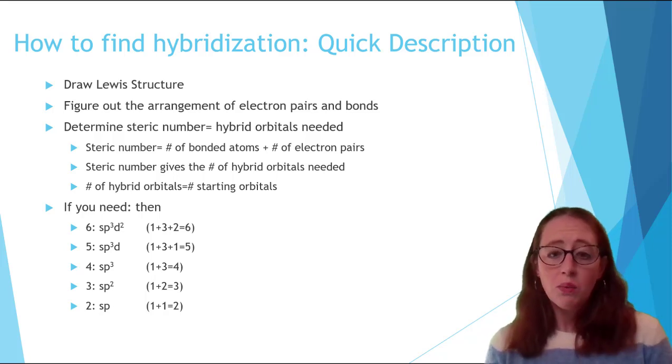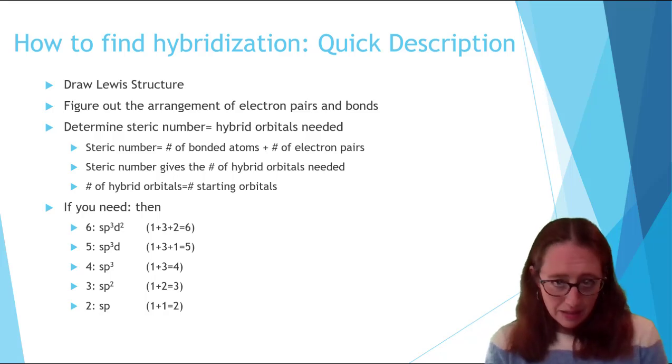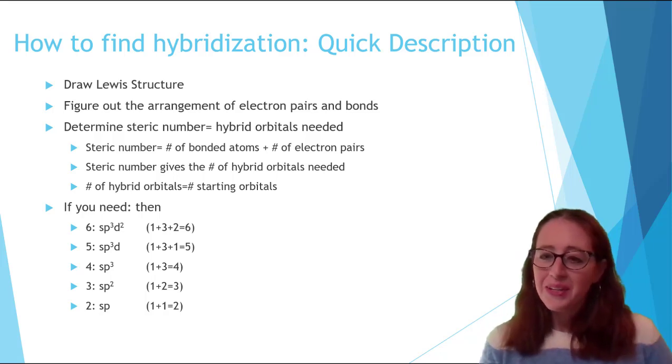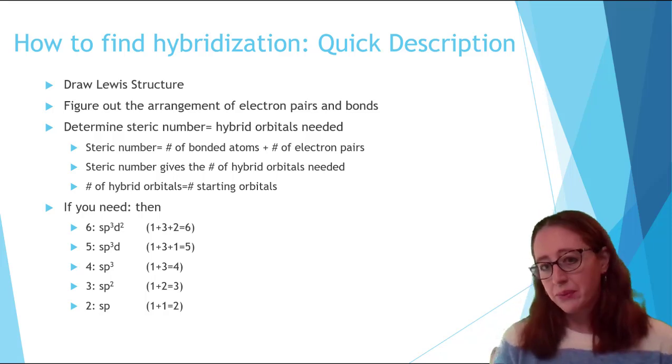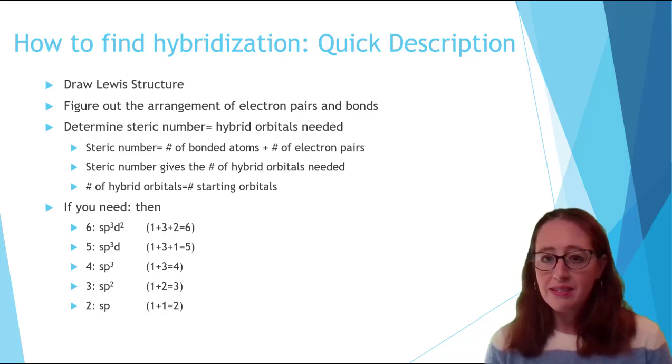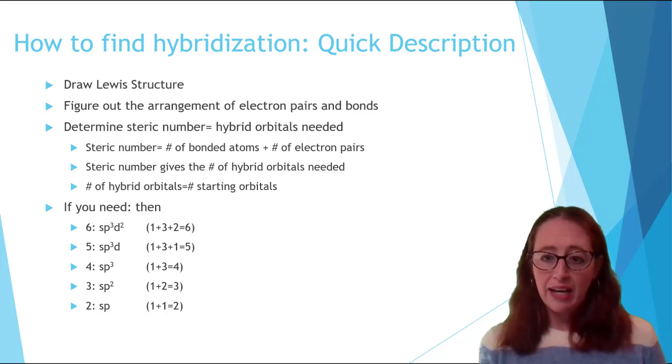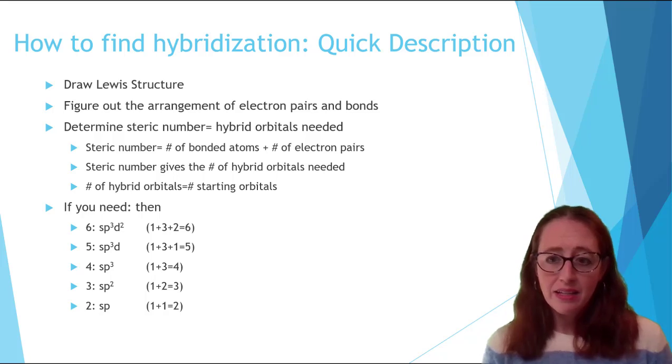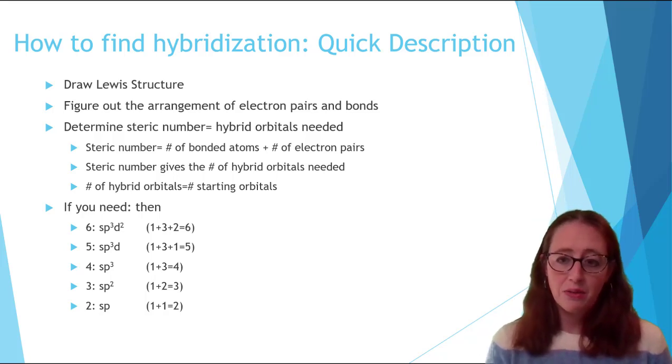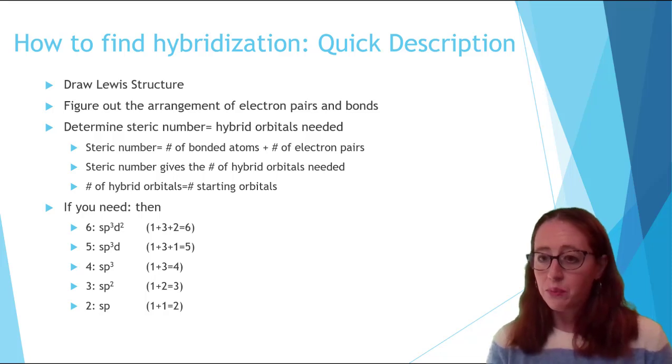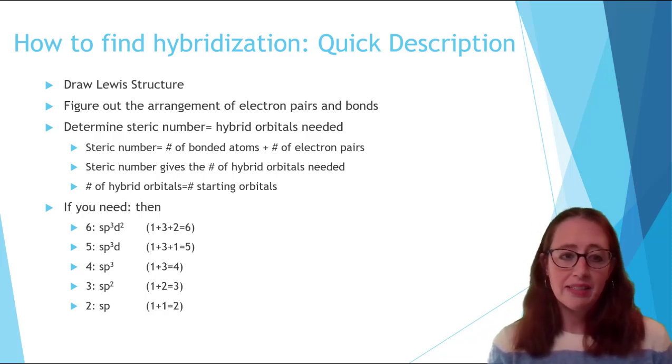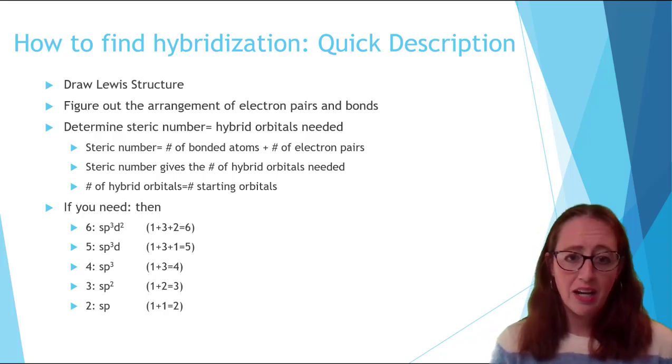From here, we'll know that we need the number of hybrid orbitals that is equal to our steric number, which means that's how many orbitals we need to start with. So if the atom has a steric number of three, then you need one S and two P orbitals, which will give you three SP2 orbitals. If an atom has a steric number of five, then you would need an S, three Ps, and one D. So an S, three Ps, which is four, and one D, which is five, giving us a hybridization of SP3D.